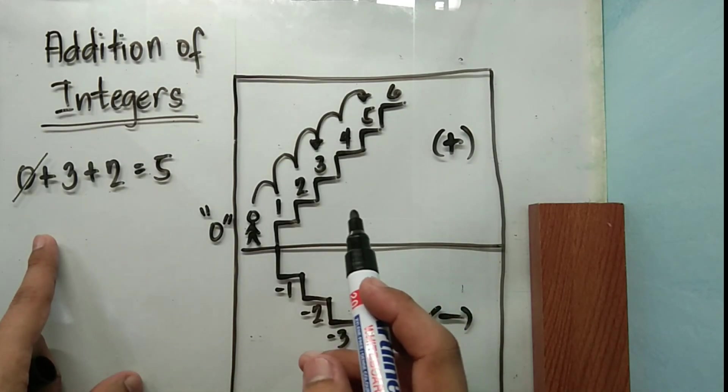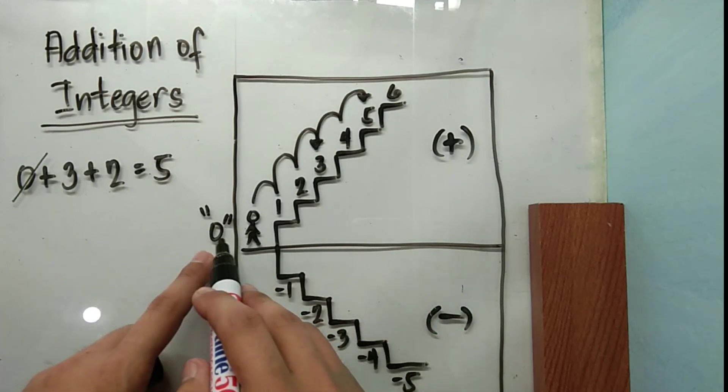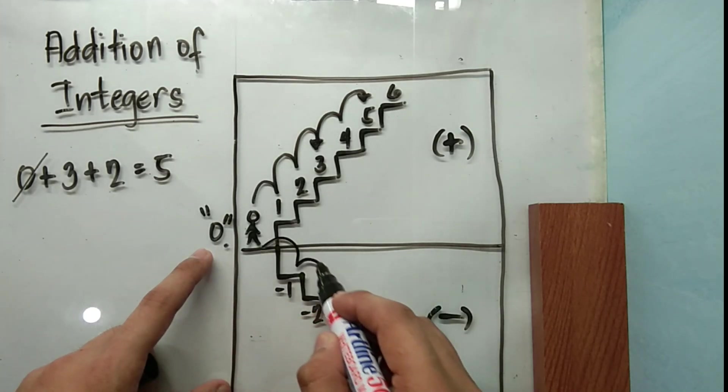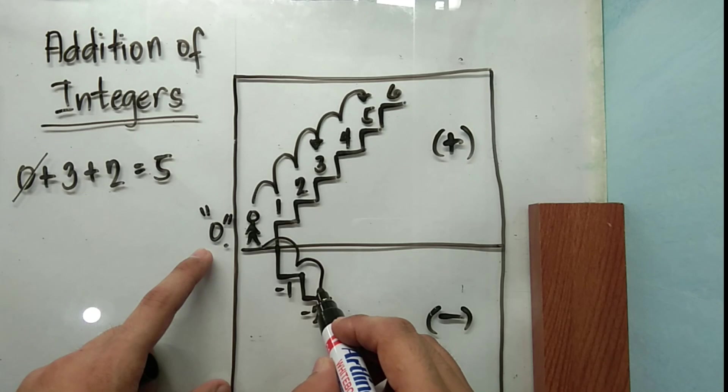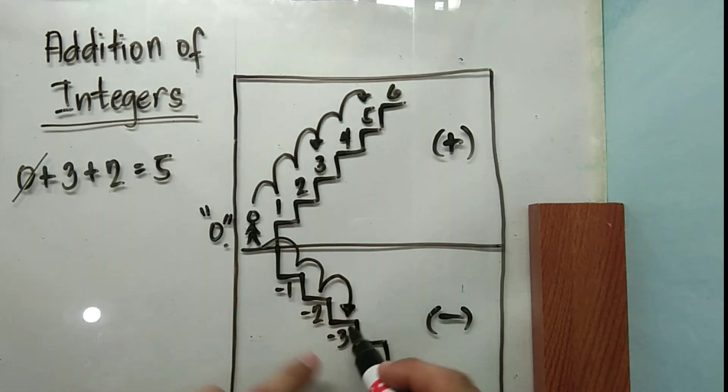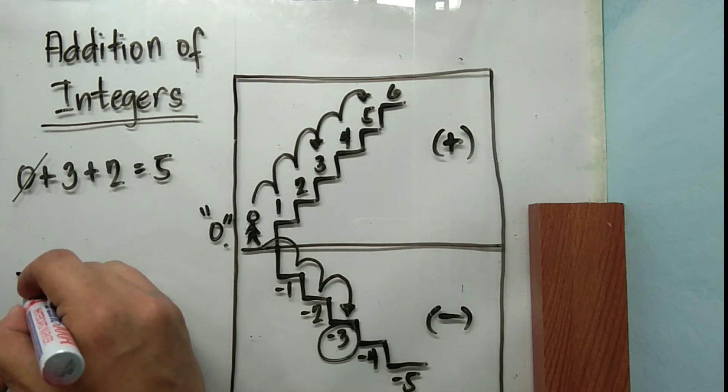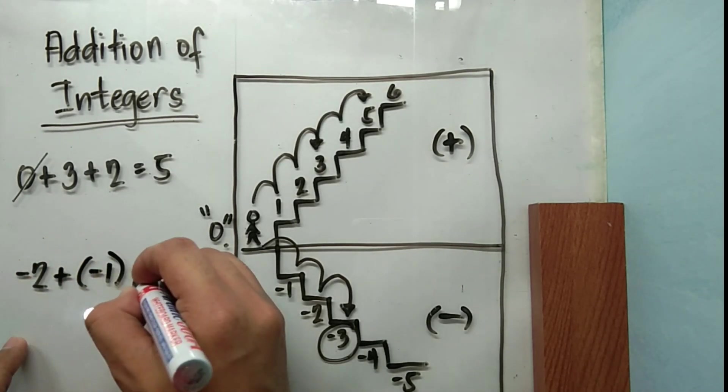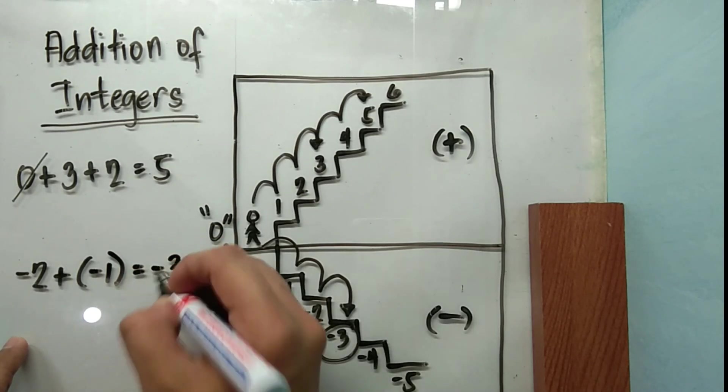Similarly, if you are asked to walk two steps downward from your initial position, two steps downward, and another step going down, your new position will be on the negative three value. In equation, this would be equal to negative two plus negative one, which will be equal to negative three.